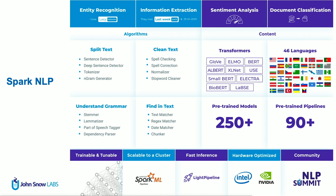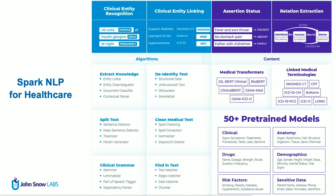The library has models for 46 languages — a year ago we only had one — and we expect to continue growing worldwide coverage. On top of the open source library, which is Apache 2.0 licensed, we have a commercial product called Spark NLP for Healthcare, which does the same thing but for clinical and biomedical NLP. That is a somewhat separate problem even from an academic and algorithmic perspective, with different benchmarks and different deep learning models.